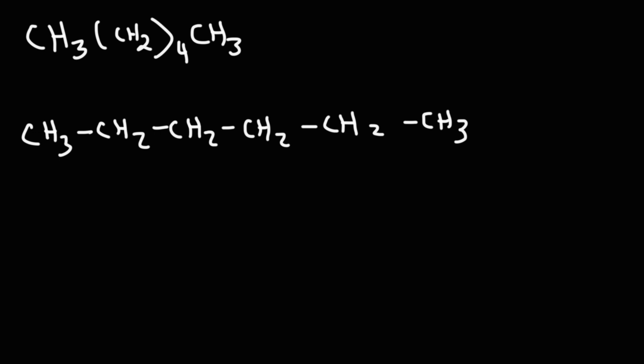In order to convert this into a skeletal structure, we need to draw lines. This one line represents two carbons. This is a carbon, and this is a carbon. So this would be the CH3 carbon, and this would be the CH2 carbon.